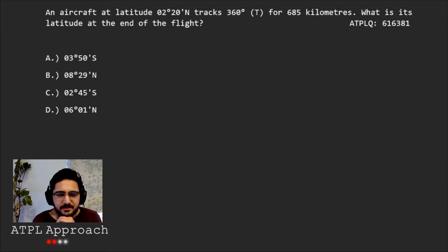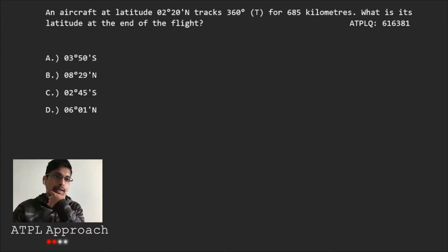We've got an aircraft at that latitude, 2 degrees and 20 minutes north. And it tracks 360 degrees true for 685 kilometers. He wants to know what is its latitude at the end of the flight. What are you thinking about this one? How do we start? Basically, it's just changing latitudes. So it's going north. Yep.